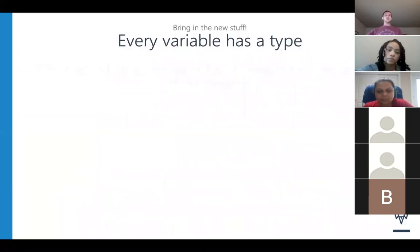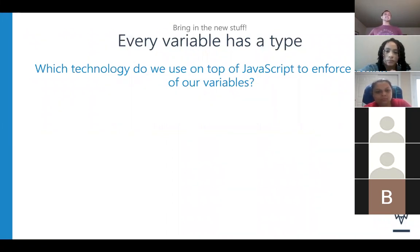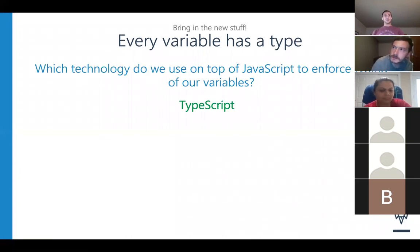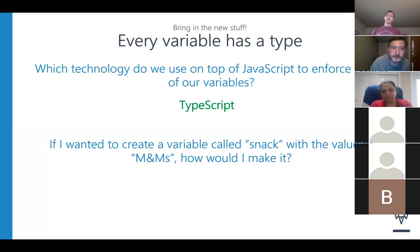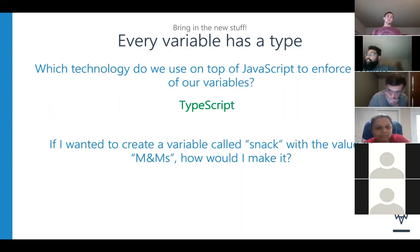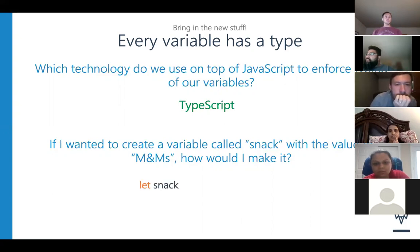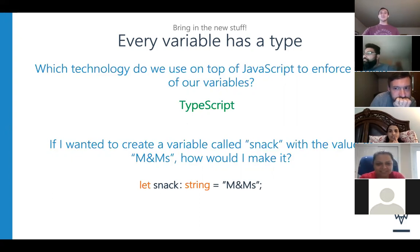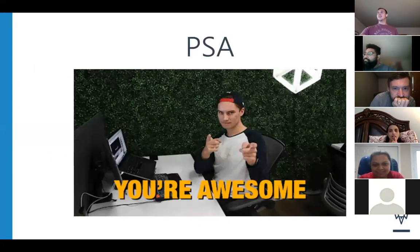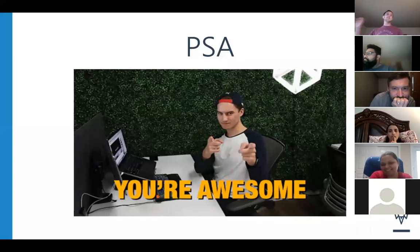Remember, every variable has a type. What technology do we use on top of JavaScript — we sugarcoat JavaScript with — to enforce typing of our variables? TypeScript. Very good. TypeScript is the thing enforcing those types on your variables. If I wanted to create a variable called snack with the value of M&Ms, how would I make that in TypeScript? Let's start with the variable name first. Let's make. Colon, string. Equals. M&Ms. That is exactly right — remember our colon and then the data type. Awesome job everyone — you guys are freaking awesome. You've learned so many technologies; that's just the tip of the iceberg of what you actually know.